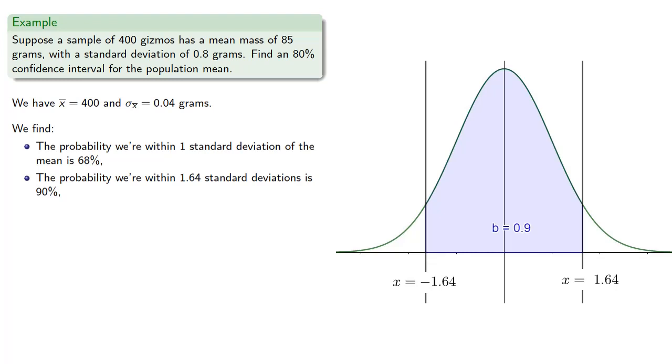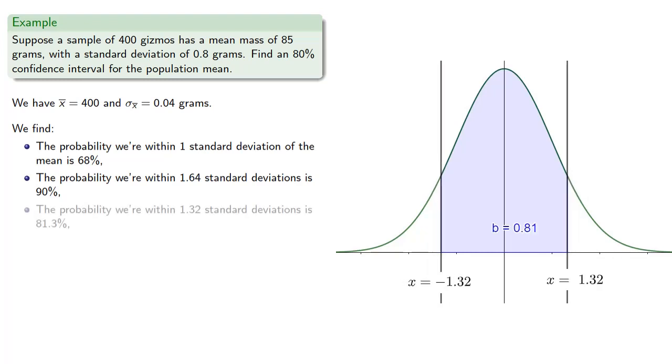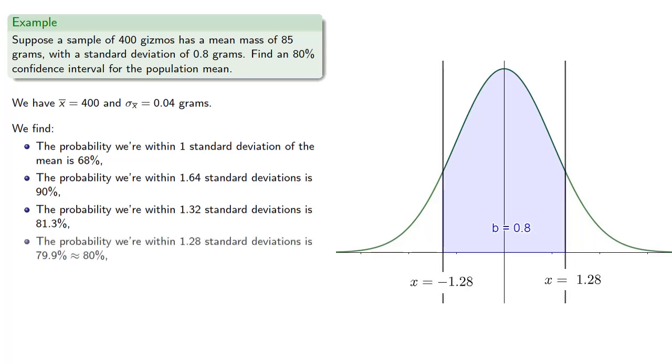So let's narrow our interval. So the probability we're within 1.32 standard deviations is a little bit over 81%. We're almost there, so let's narrow it just a little more. And at 1.28 standard deviations we have our 80%.